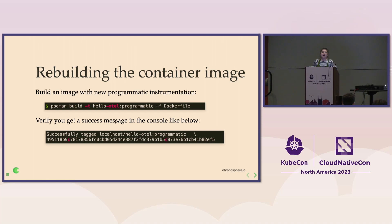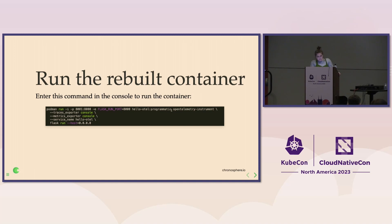This is the loop we've been talking about: rebuild the container image, run the container, send some traffic, and validate results. This is the loop you should get used to when you're instrumenting. In this case, the only thing I've changed is tagging this image as 'programmatic' — in case you wanted to compare manual versus programmatic versus auto instrumentation later. Make sure you get the success message that you've built it, then go ahead and run.